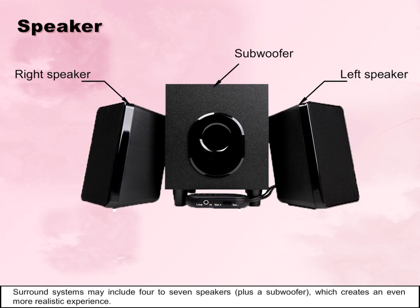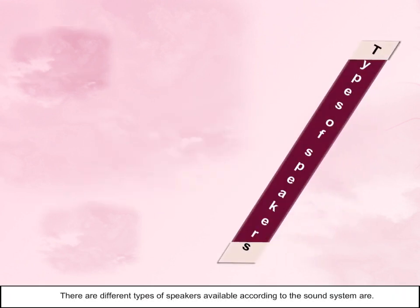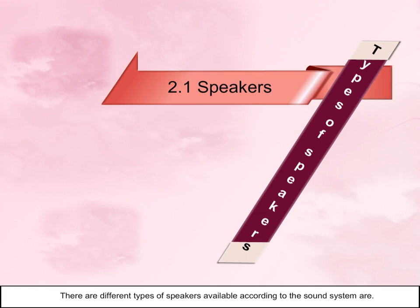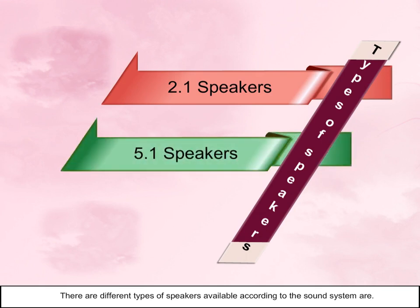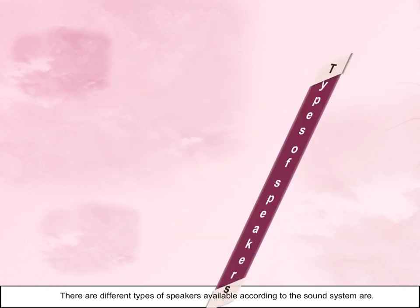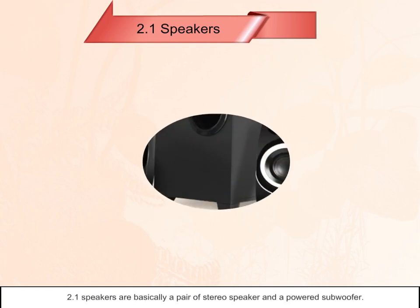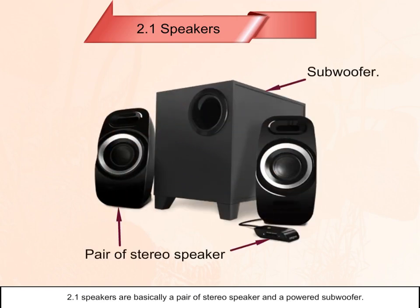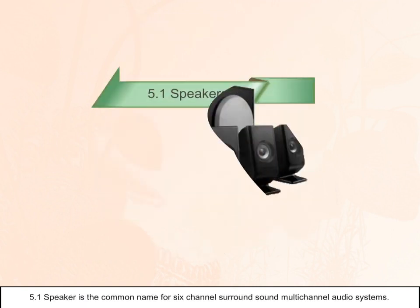There are different types of speakers available according to the sound system: 2.1 speakers, 5.1 speakers, and 7.1 speakers. 2.1 speakers are basically a pair of stereo speakers and a powered subwoofer.